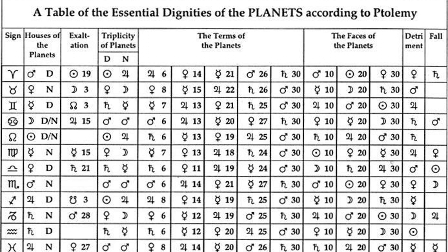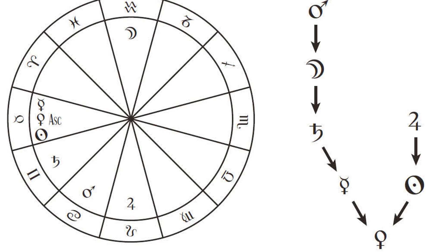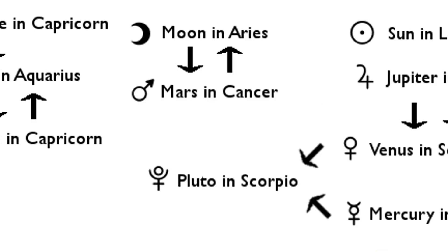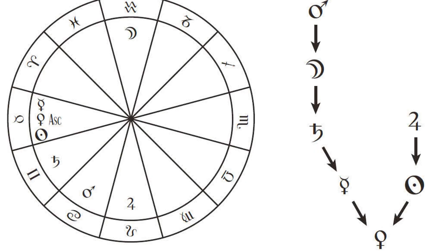There are three major types of final dispositor. First, one powerful planet that disposes every planet in the chart. Second, planets in mutual reception — a pair of planets that dispose each other as well as the rest of the planets in the chart. Third, a repeating loop of three or more planets that act as a group dispositor. There will be chart examples of well-known individuals for each type. Every dispositor will itself have a dispositor until you get to one that you designate a final dispositor. This final dispositor can become very influential.